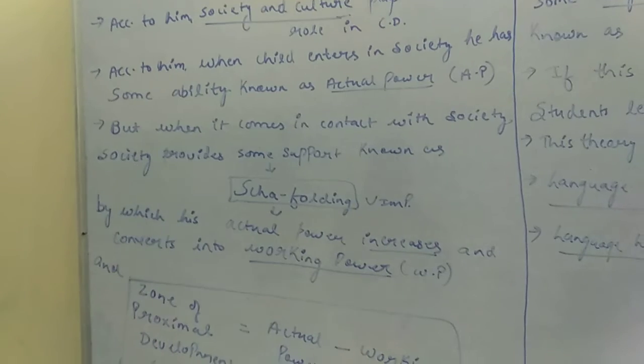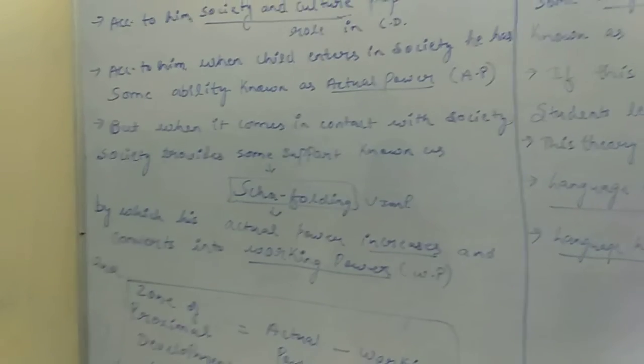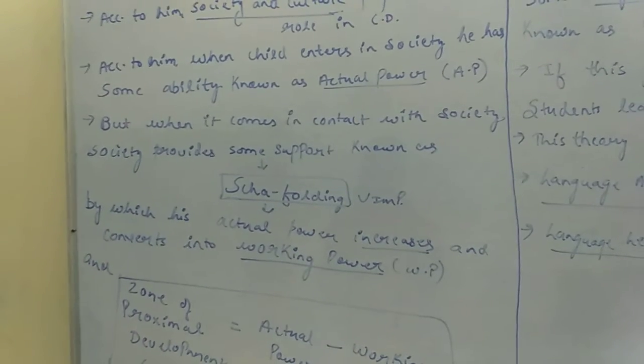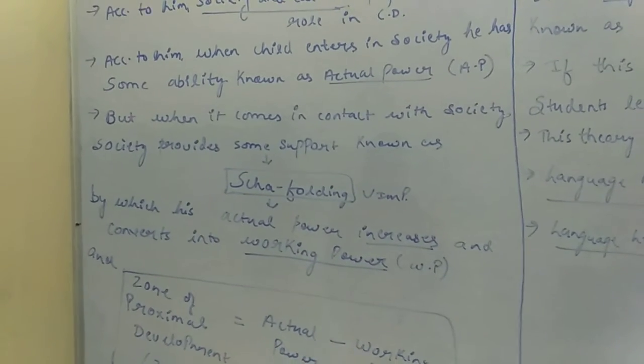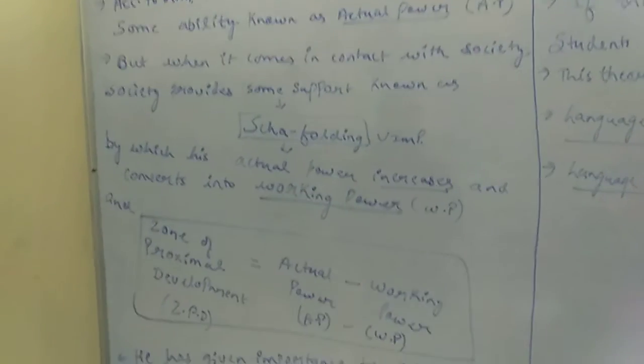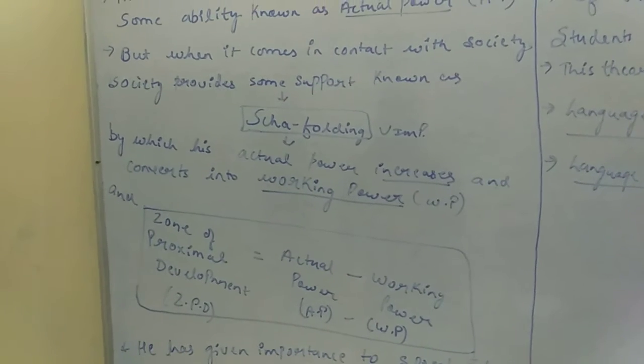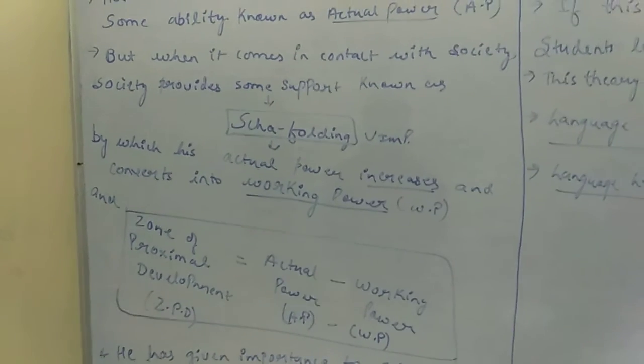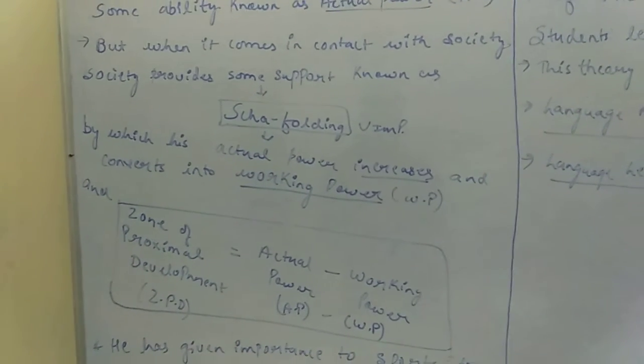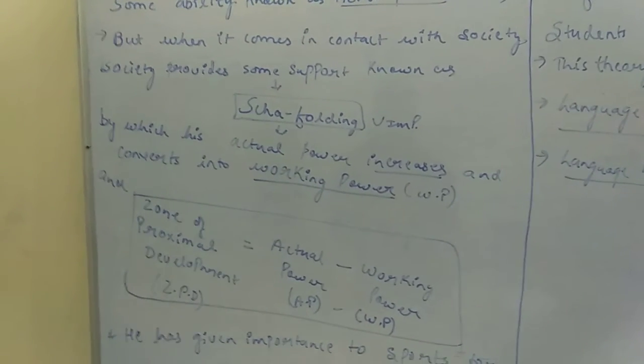One last point in Vygotsky's theory is the importance of sports and play. He believed that when children play, they can achieve maximum development. He gave a lot of importance to sports. To summarize: ZPD equals actual power minus working power, and this is the core of Vygotsky's Social Development Theory.